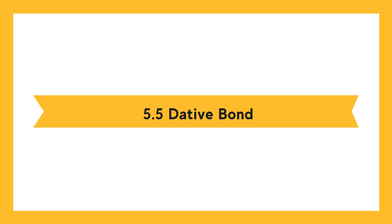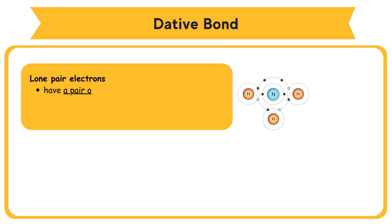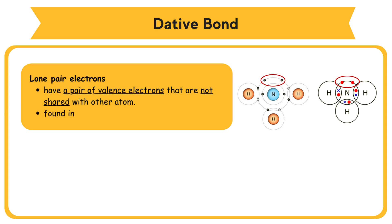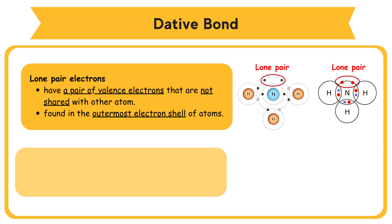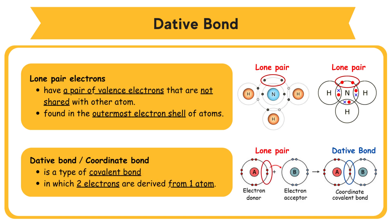5.5 Dative Bond. Lone pair electrons have a pair of valence electrons that are not shared with other atoms, and it is found in the outermost electron shell of atoms. Dative Bond or Coordinate Bond is a type of covalent bond in which two electrons are derived from one atom.